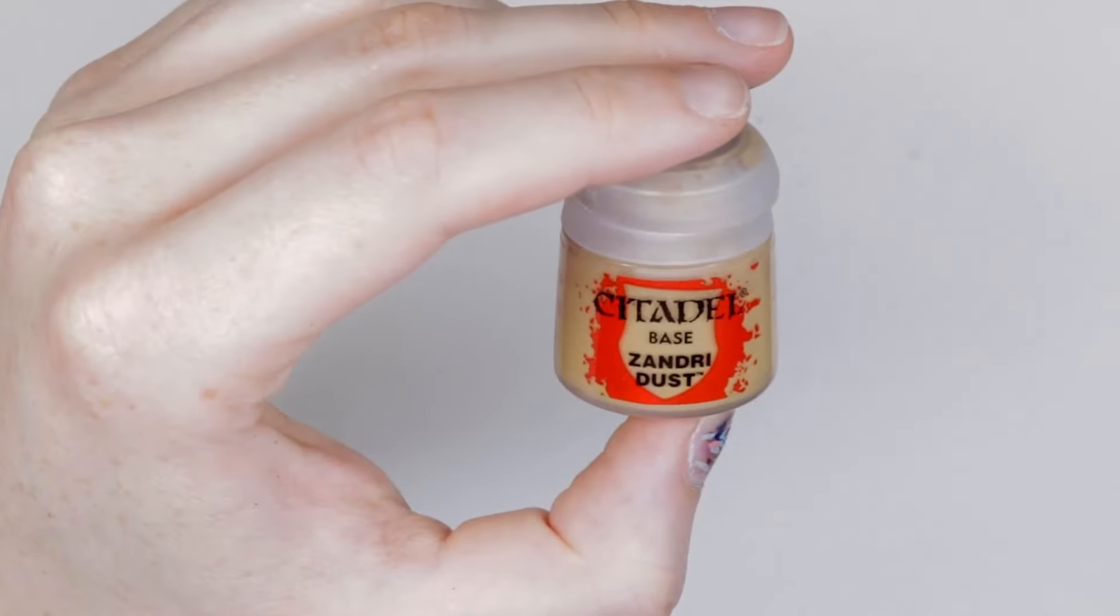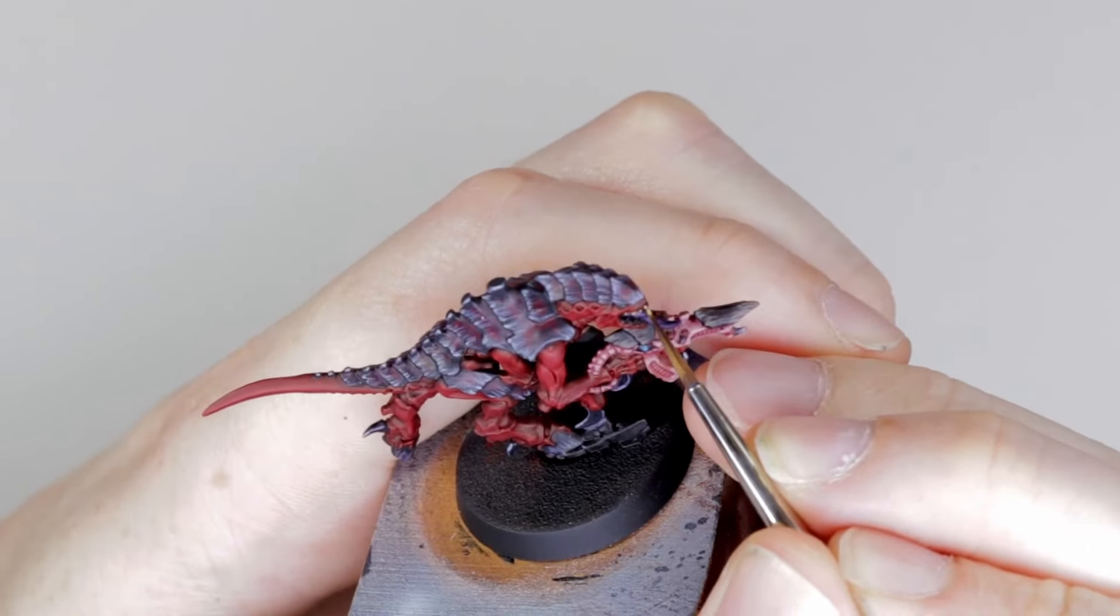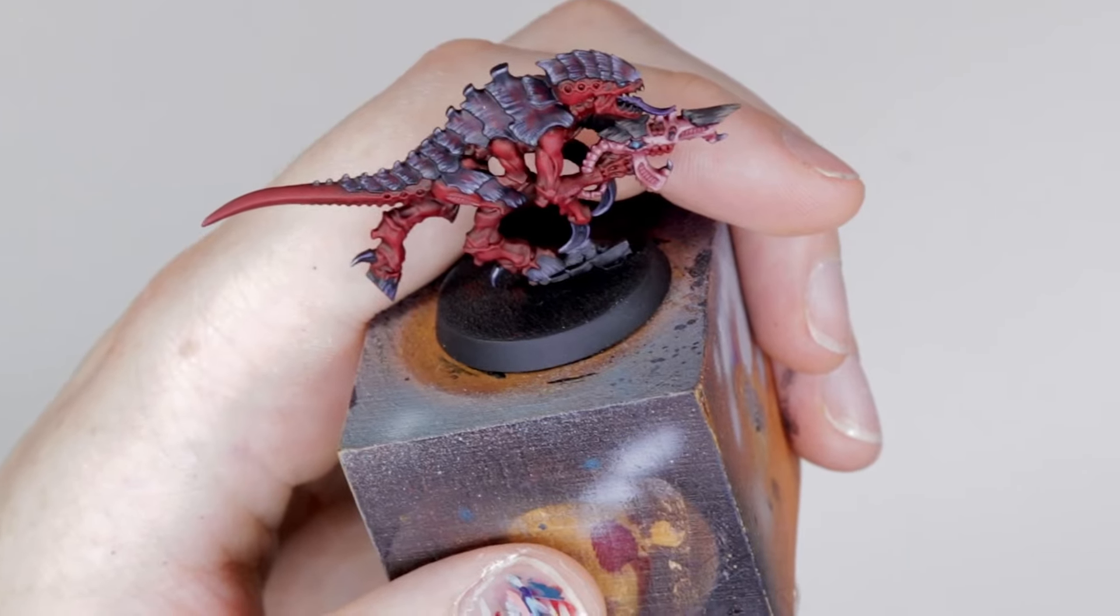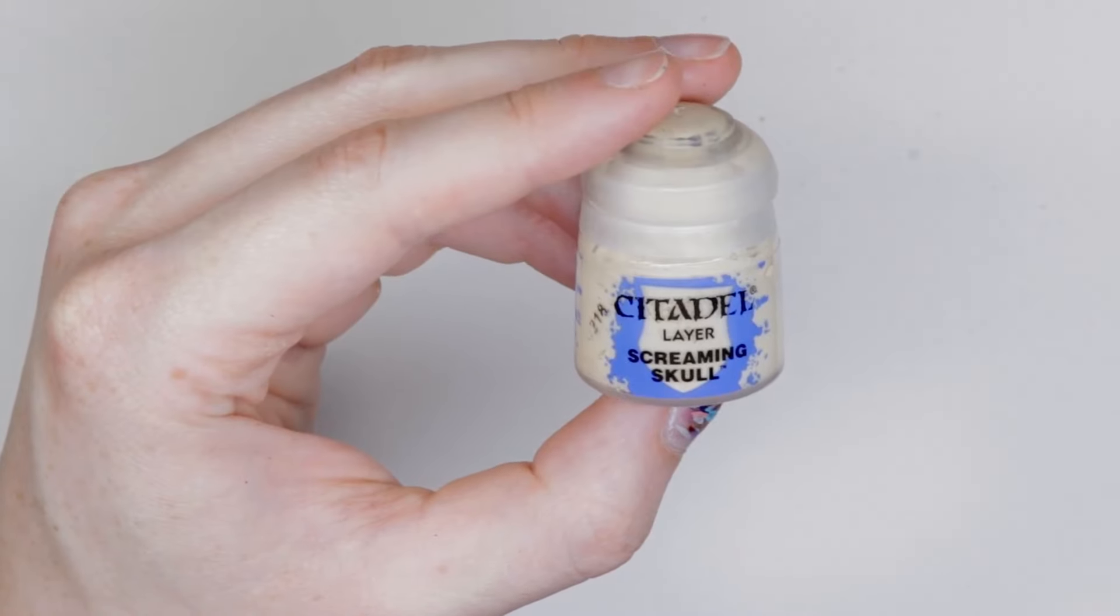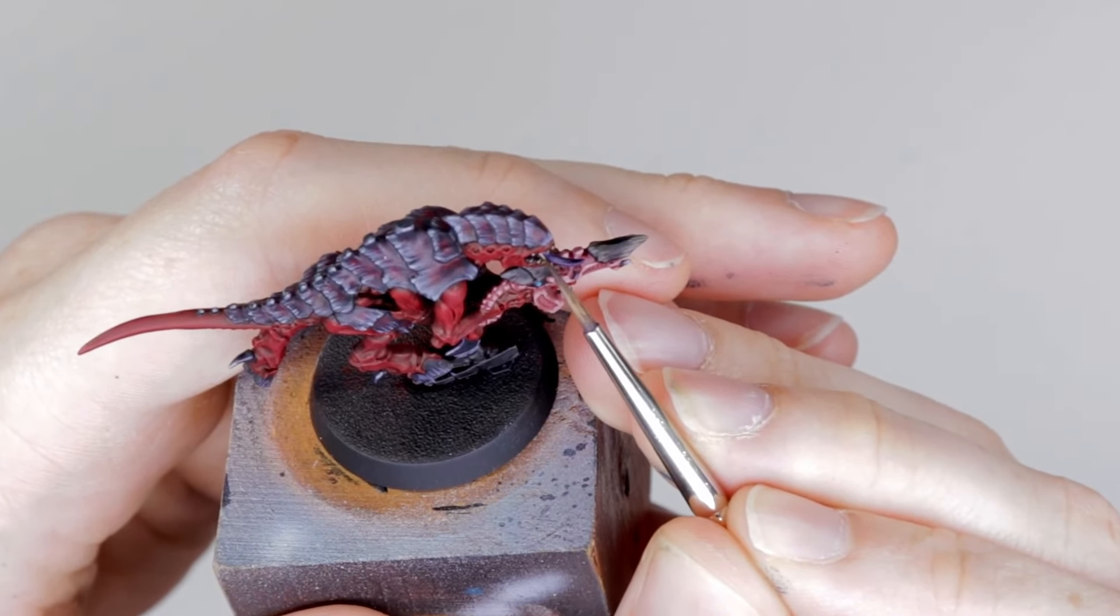Then the final detail, we're going to paint the teeth. It's Zandri Dust on each of the teeth, making sure there's black showing between each of the teeth still. And finally we're going to highlight that with Screaming Skull just on the ends of the teeth. And then we're done.